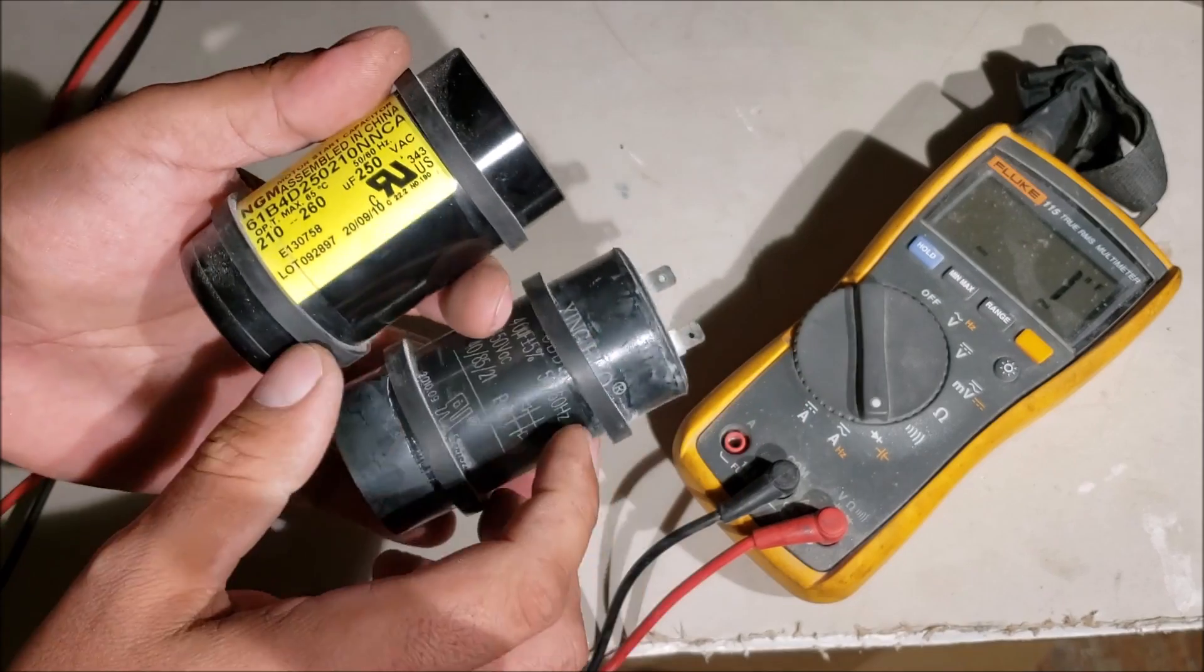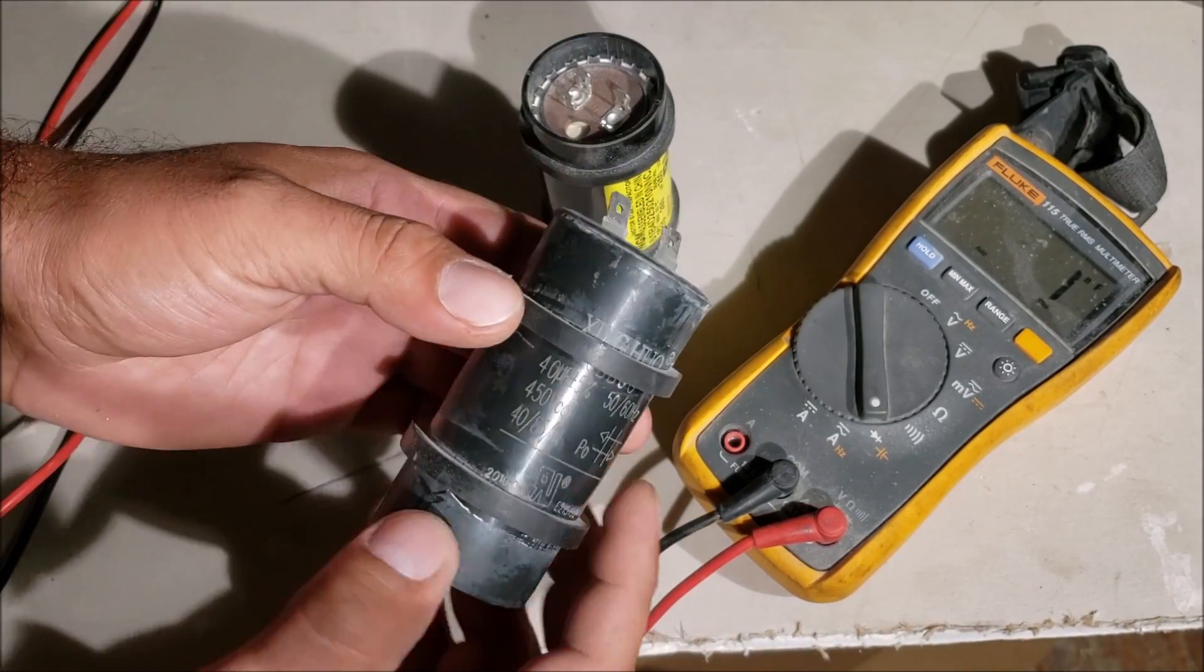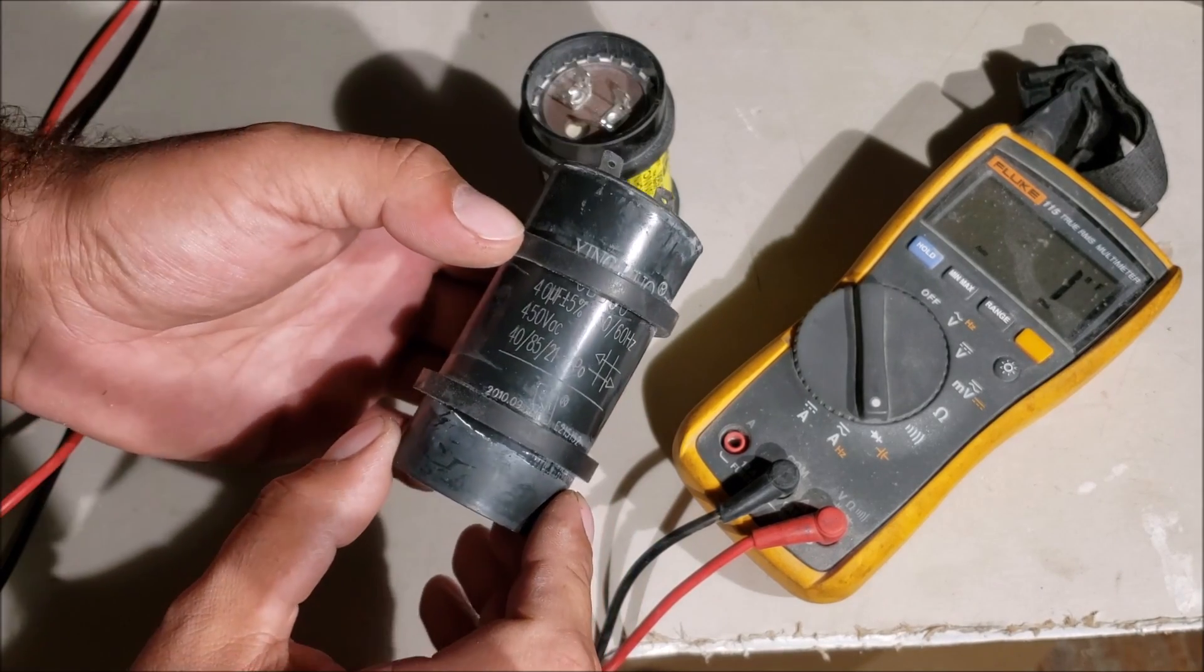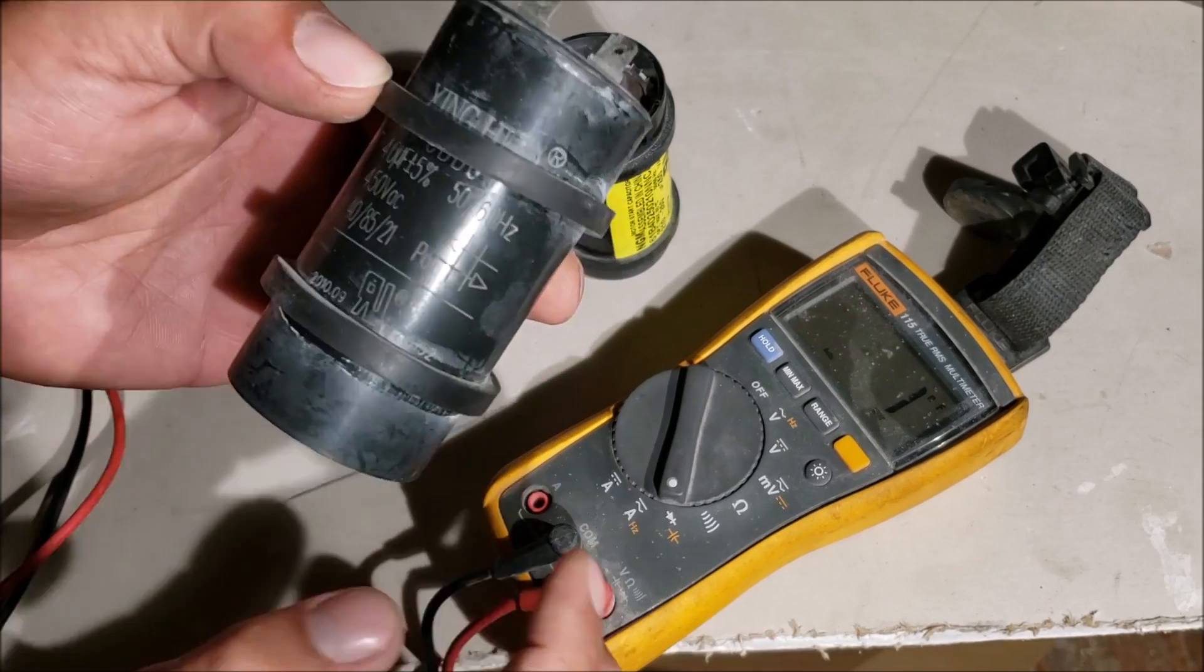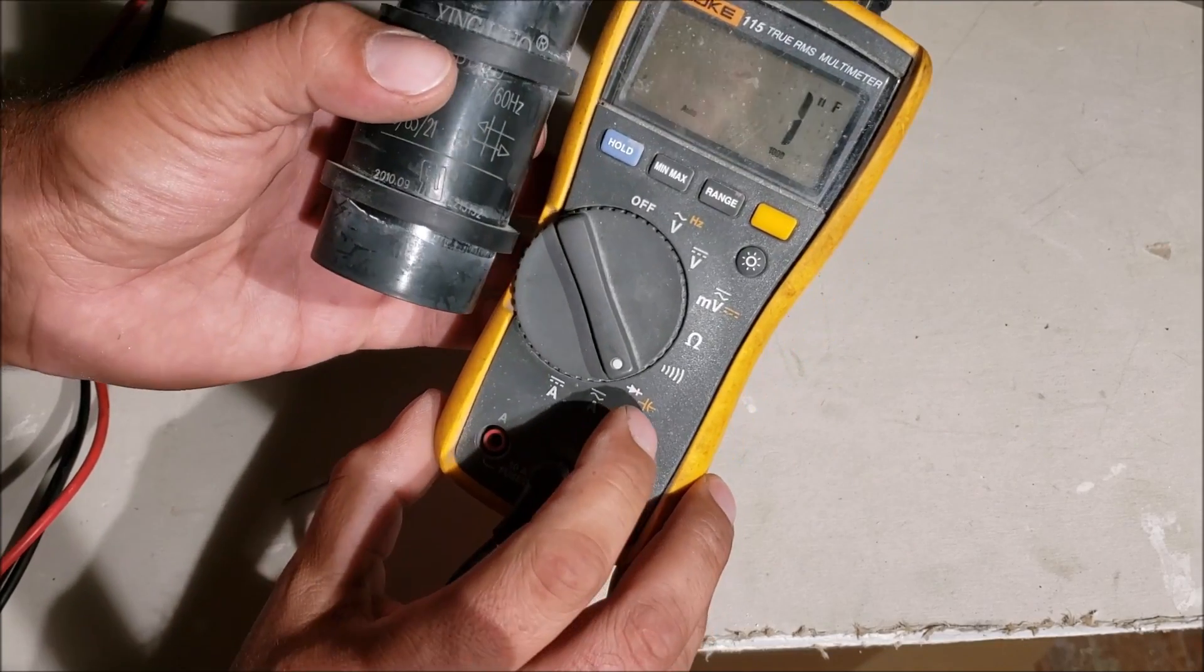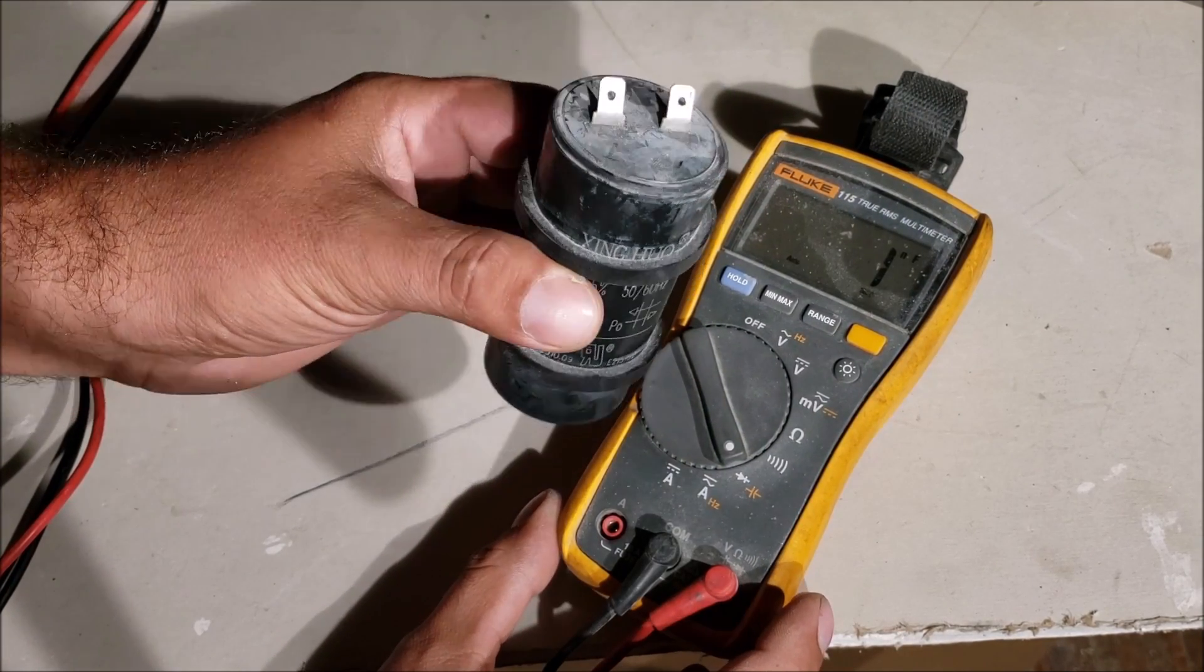We're looking for 38 to 42, we're getting 35.5 microfarads. So this run capacitor is actually bad. That's why it's very important to test the capacitance with the correct meter, because the other two tests we're not going to be able to check that like we did. We've got two good ones and one bad one.